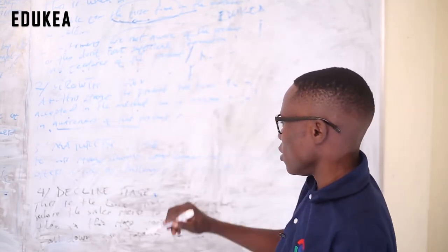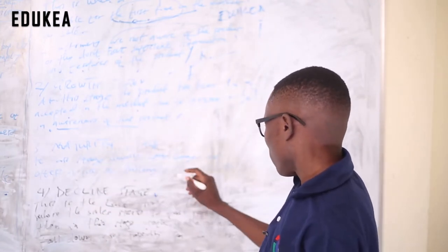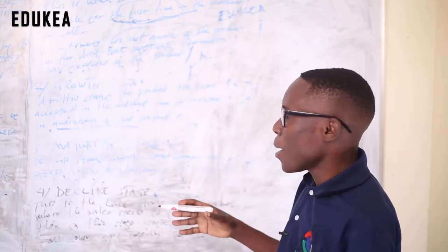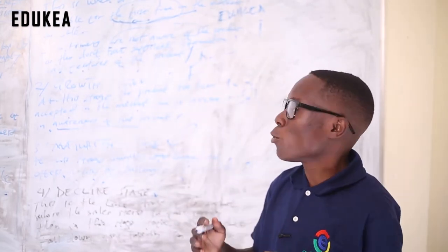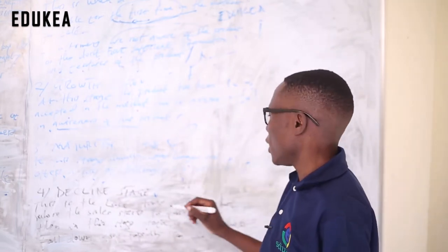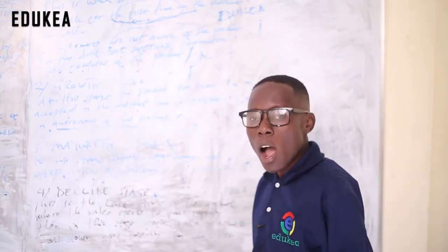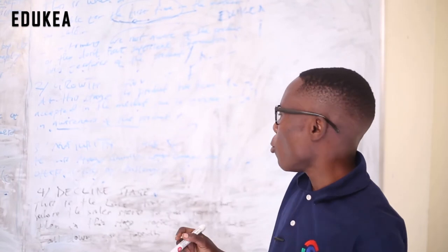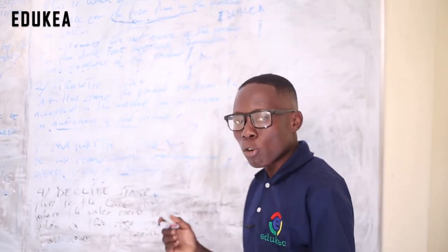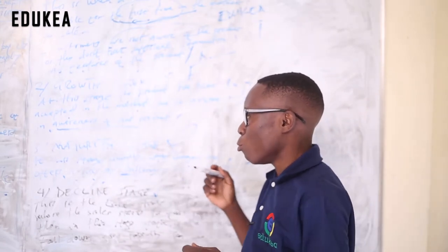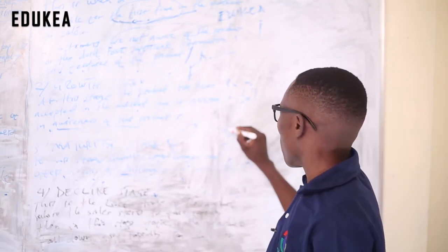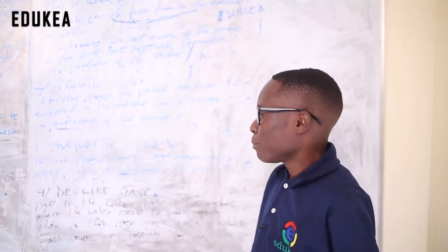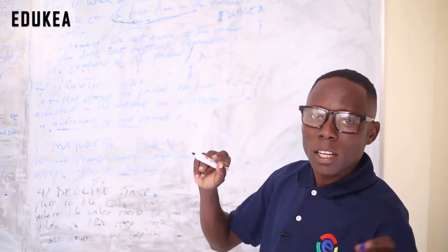After the growth stage, we enter the maturity stage. By definition, this stage usually lasts longer and offers a lot of challenges to marketers. At this point, the product has matured in the market. Many people now know the product, and competitors may start copying what you are doing or offering similar or even better products. You must be prepared to face the challenges that exist in the market at this stage.